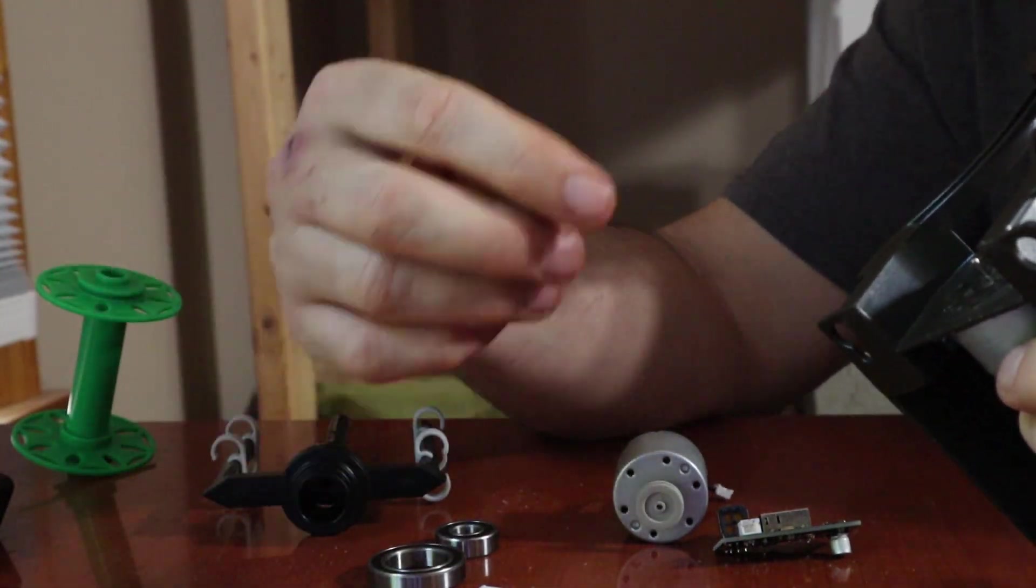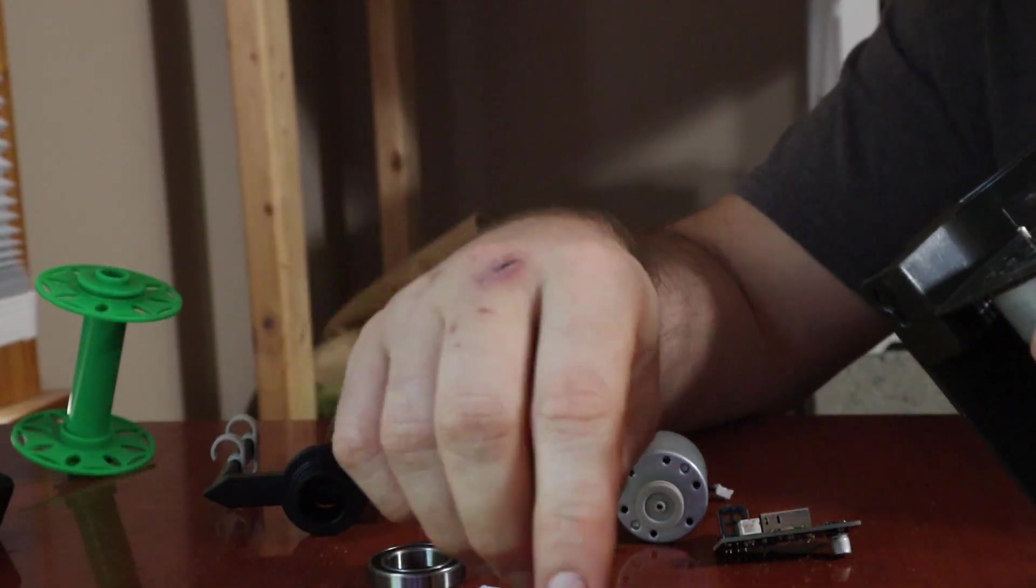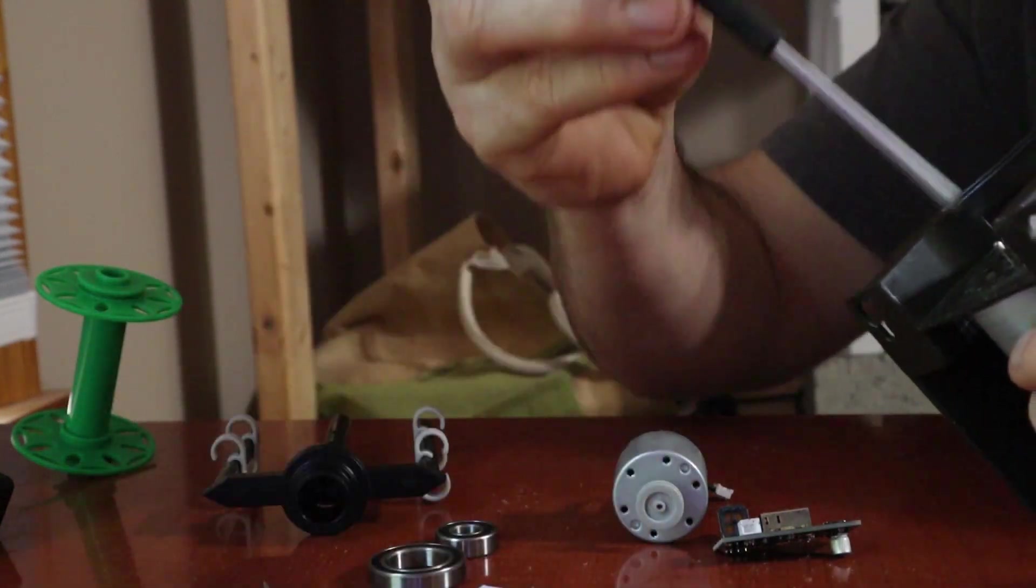You can pull off the pulley on the motor. If you have trouble doing that with your hands you can use a flat head screwdriver, but I find I can just do it with my hands pretty easily.